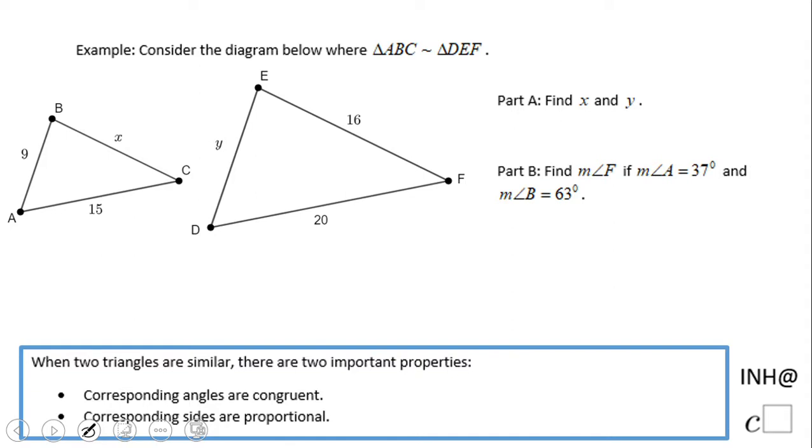Welcome or welcome back to INeedHelpAtCSquared. In this example, we're going to look at two similar triangles. What is cool about similar triangles? If you notice here, we have two properties: one, the corresponding angles are congruent; two, the corresponding sides are proportional. These are two important properties for similar triangles.